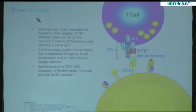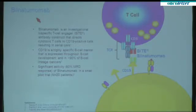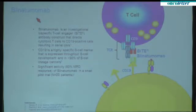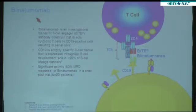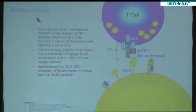And here Blinatumumab comes into play. It is a new treatment principle — a bispecific antibody directed on one side to CD19, which is expressed on the surface of B-precursor ALL blast cells, and on the other side to CD3, thereby attracting CD3-positive T cells and bringing them into very close proximity to the target cells. This leads to T-cell activation, proliferation, and a serial kill of the target cells, which is very effective. Data from a small pilot study from Germany, where we treated 20 MRD-positive ALL patients, showed a response rate of 80%. There are also much more data with Blinatumumab in relapsed refractory ALL.